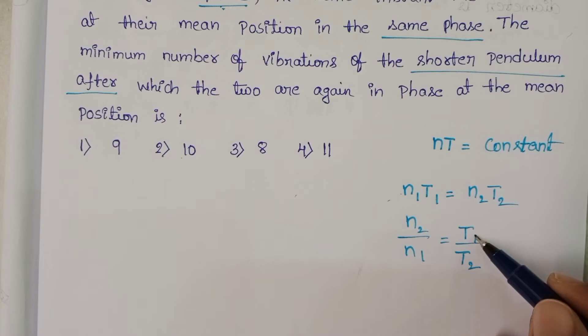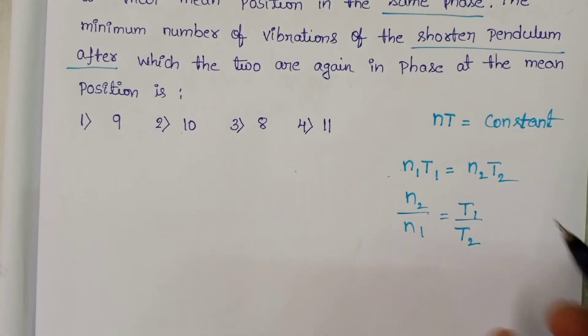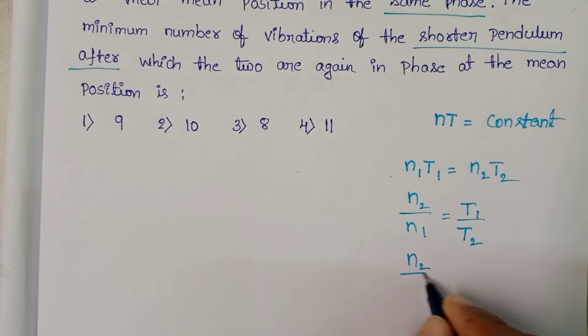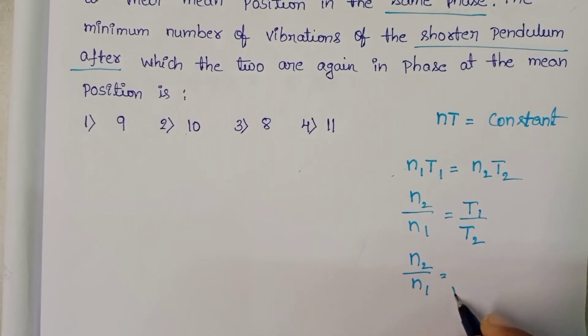And we know time period is directly proportional to square root of the length of the pendulum. Then N2 by N1 equals square root of L1 by L2.